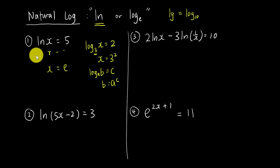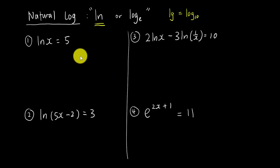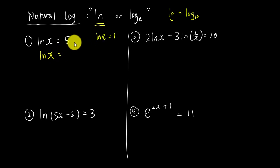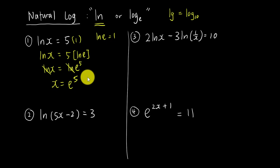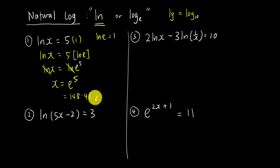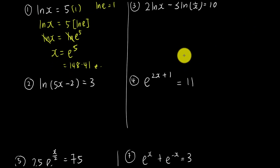If you can't remember that rule in the exam, here's an alternative. Remember ln(e) = 1, so 5 × 1 = 5. You can write 5 × ln(e), then ln(x) = ln(e^5) — the log rule lets you bring the 5 down as a power. Then ln and ln cancel, and x = e^5. If you type it in a calculator, you get 148.41.